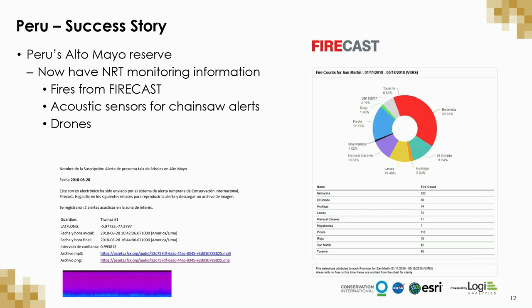Threats from fires are detected by satellites in space. Acoustic sensors on the ground listen for sound waves generated by chainsaws. When recognized, Firecast sends an alert to park managers, and drones are dispatched by rangers to investigate. The email alert contains the approximate location, time and date of detection, an audio file recording, and a spectrogram depicting the frequencies that make up a chainsaw sound. The Firecast Analytics dashboard shows total fire counts by district in San Martin.